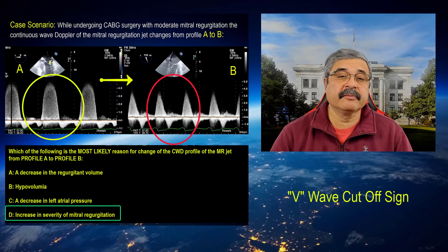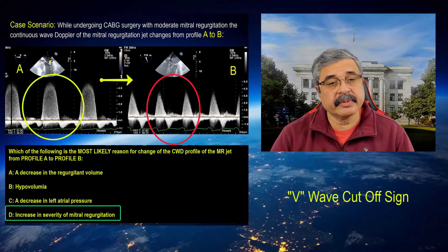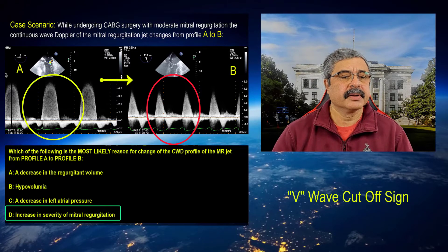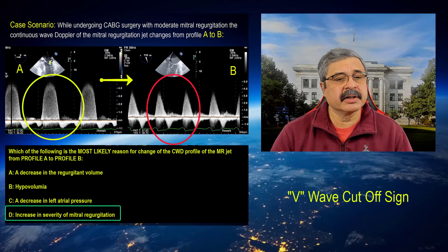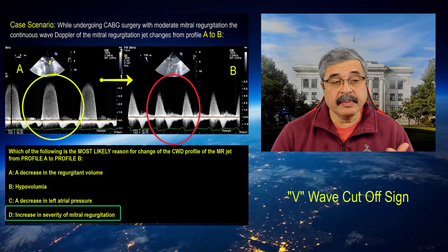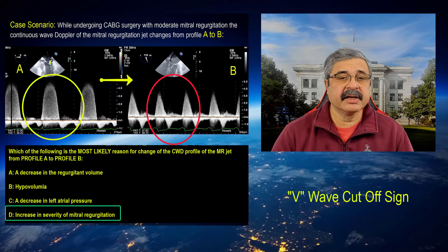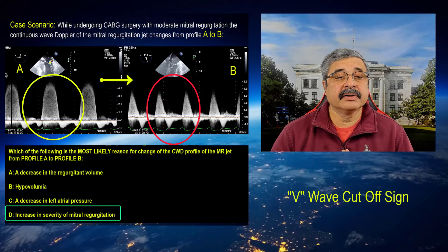so more volume is going from the left ventricle to the left atrium, causing rapid equilibration representing the V-wave cutoff sign. A decrease in regurgitation volume is counterintuitive, so that's incorrect. Hypovolemia is also incorrect — it doesn't have anything to do with this finding.